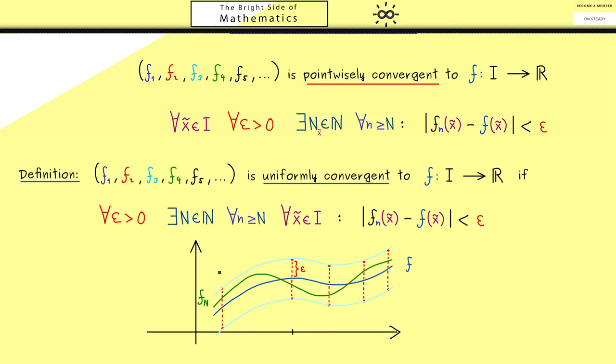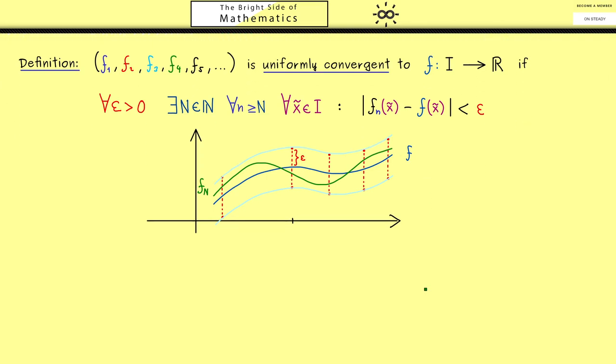So you immediately see this is more than we had for the pointwise convergence. And also this picture tells us that it should be possible to measure a distance between two functions. By having this distance, you can see that the uniform convergence is indeed very natural.